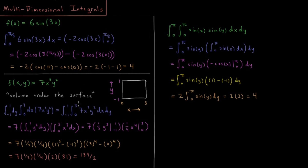So that's integration in one dimension. To extend this to multiple dimensions, let's say we have f(x,y) = 7x³y². In one dimension the integral gave the area under the curve; in two dimensions the analog is the volume under the surface. We want the volume over the square region from −1 to 1 in y and from 0 to 3 in x. That's the integral from −1 to 1 in y times the integral from 0 to 3 in x of 7x³y².